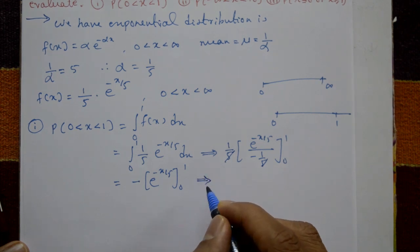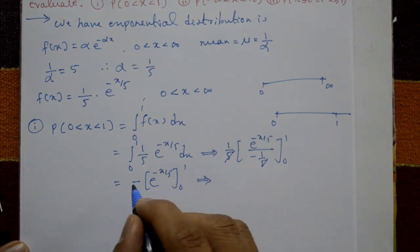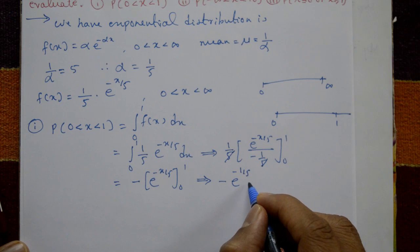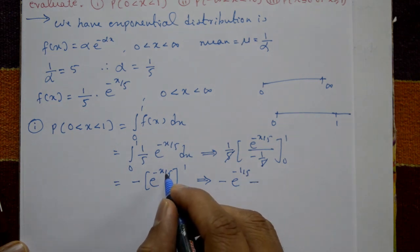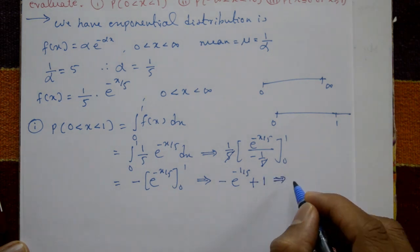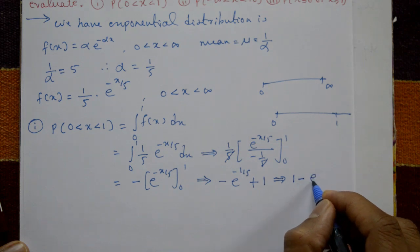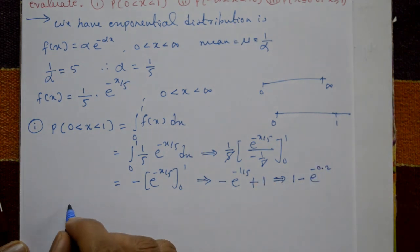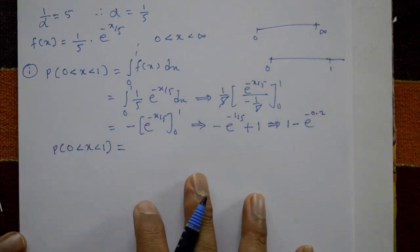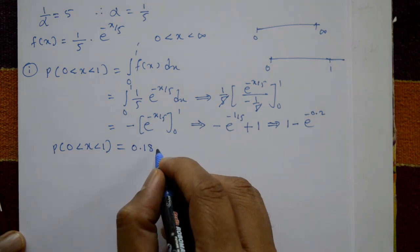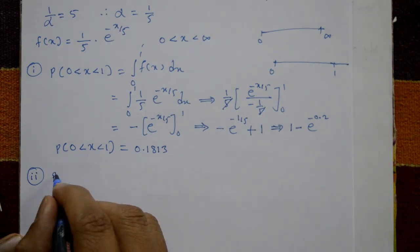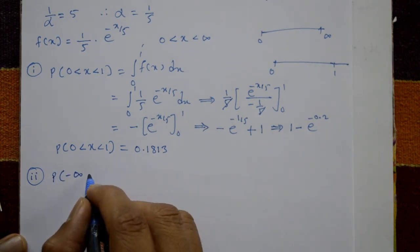Applying the limits: put x equals 1, giving minus e raised to minus 1 by 5, then minus the lower limit where x equals 0, so e raised to 0 equals 1, giving plus 1. This simplifies to 1 minus e raised to minus 1 by 5, where 1/5 means 0.2. Therefore probability of 0 less than x less than 1 equals 0.1813.